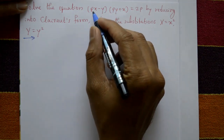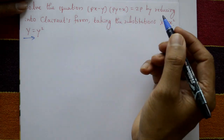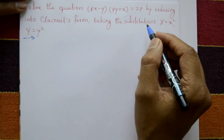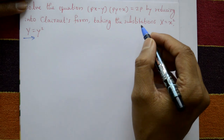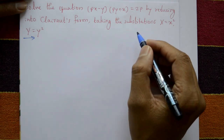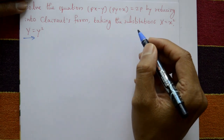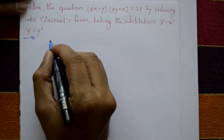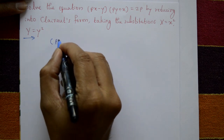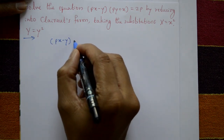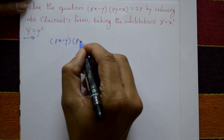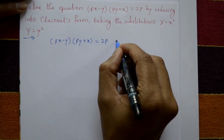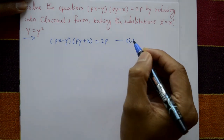First reduce the given equation into Clairaut form, then put p equal to c to get the general solution of the Clairaut equation. The given equation is (px - y)(py + x) = 2p. This is equation number one.